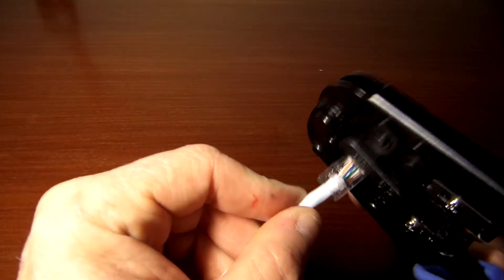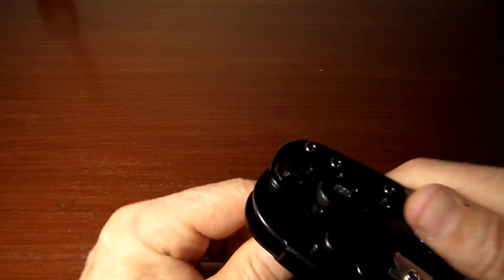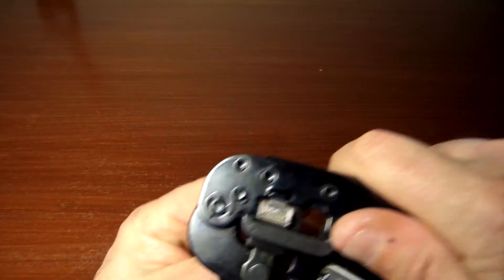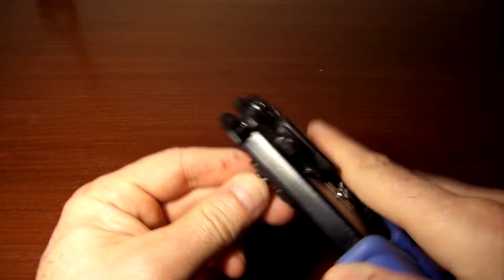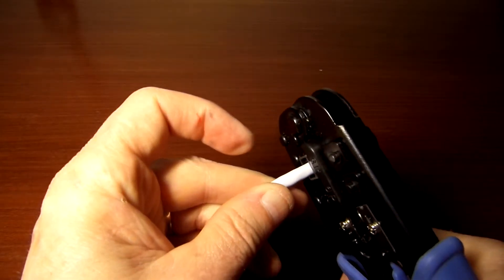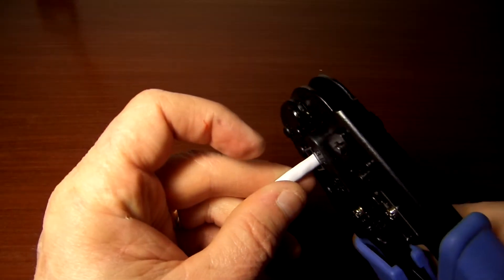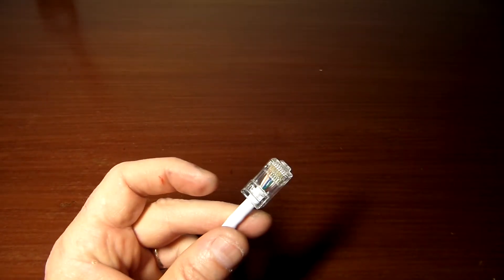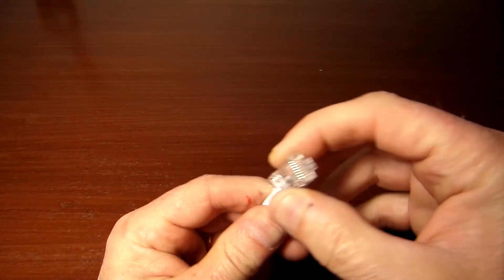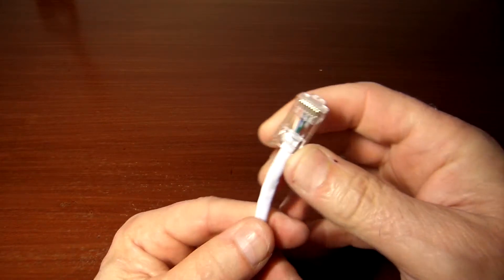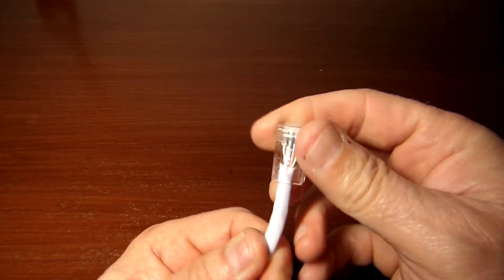You want to extend that, make sure that's extended all the way through, and then go ahead and crimp. Now I like to do this two or three times just to make sure that you've got everything connected. And it should be nice and snug when you connect it.